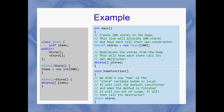I had to call delete in this first example because stores was a heap array and it's not going to fall out of scope by itself. In the second example — some function — this Store down here isn't a heap object; it's on the stack, it's a local variable. Its lifetime is the same as the function. As soon as that function ends, store is said to have fallen out of scope. When a local variable falls out of scope, the destructor is called automatically.